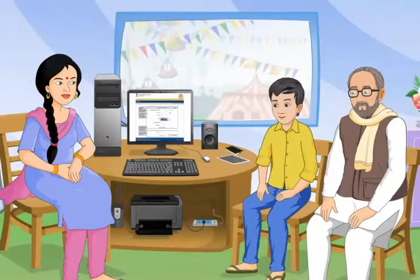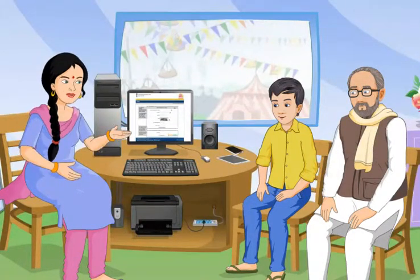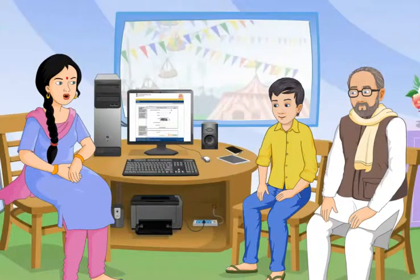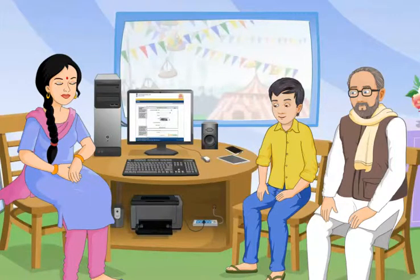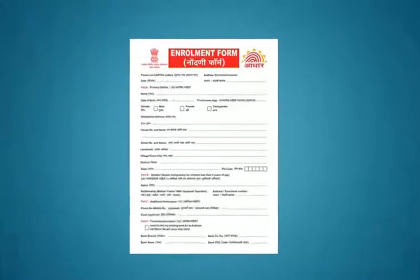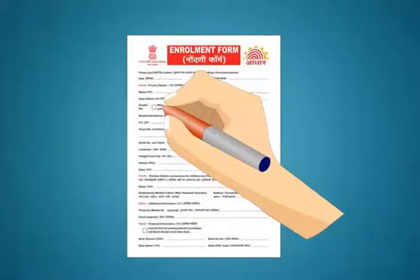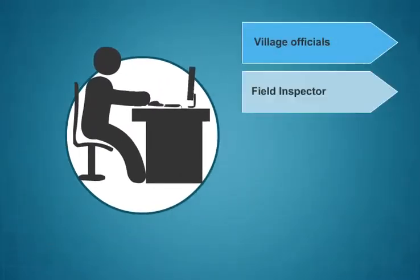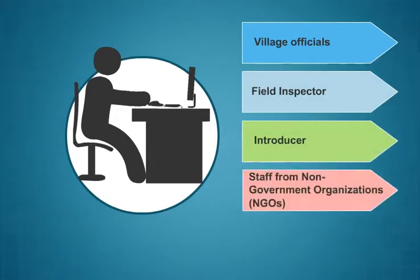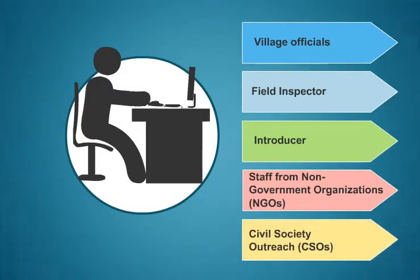Aadhaar is a 12-digit unique identification number issued by the Unique Identification Authority of India on behalf of the Government of India to every resident who enrolls for it. To enroll and get an Aadhaar card: Step 1 — Fill the enrollment form. In case of any difficulty, take the guidance of the enrollment operator. The operator may guide you in taking assistance from local support such as village officials, field inspector, introducer, staff from NGOs, civil society outreach organizations, CSOs, etc.